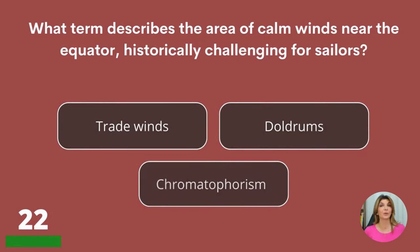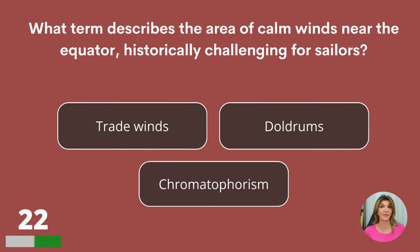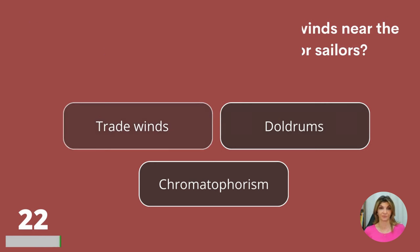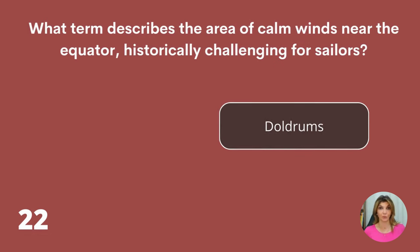What term describes the area of calm winds near the equator, historically challenging for sailors? Trade winds, doldrums, or chromatophoreism? Doldrums.